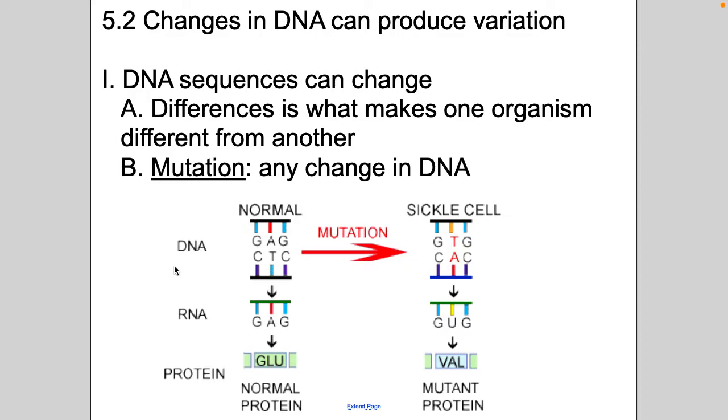When one of those letters change, there's a few different ways that mutations can be brought about. They can be brought about by radiation, chemicals you expose yourself to. Sometimes they're just random. But when a letter changes, take a look at this panel here. Here's the normal, G-A-G-C-T-C.